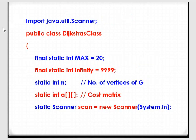Import the scanner class. Next, public class Dijkstra — that should be your file name. The maximum capacity is 20. Infinity, wherever I have used the word infinity, that is going to be represented as 999. N indicates the number of vertices in the given graph, and A indicates the cost matrix.